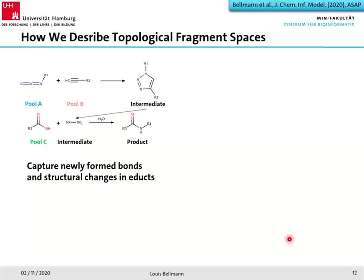First, we notice that new bonds are formed during the reaction — two bonds within the triazole and one amide bond. We have to track these. Also, structural changes occur in the fragments once they are part of a product. For example, fragments from pool B have a triple bond, but once in the intermediate product that triple bond no longer exists — it's not part of the triazole. We have to track this as well.